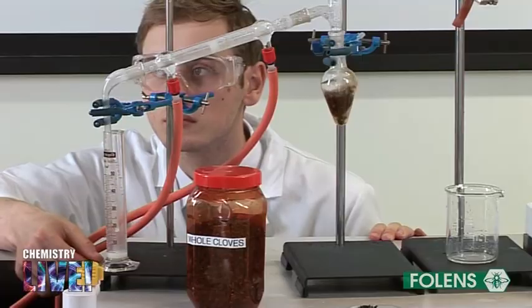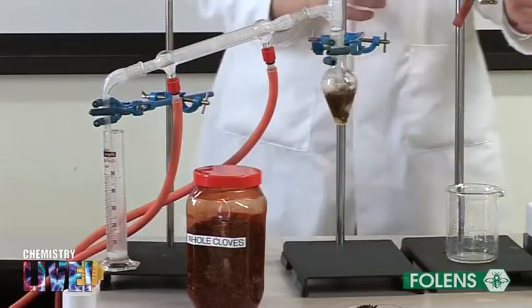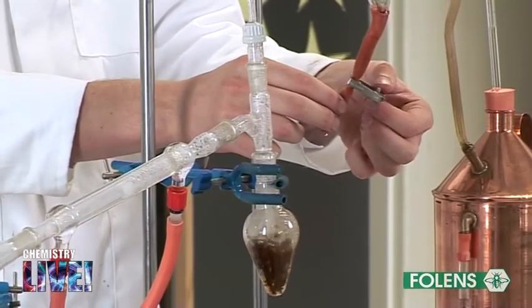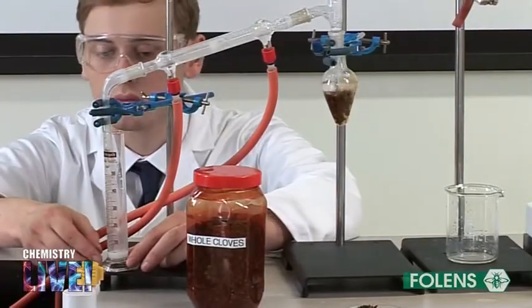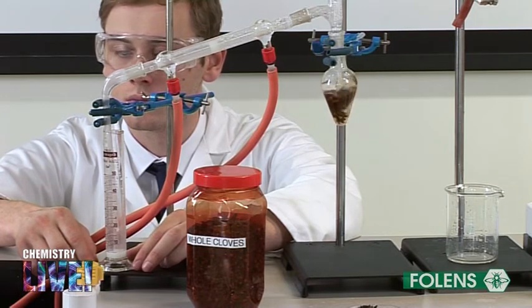Note that the emulsion has a milky colour. From time to time we may also have to empty the steam trap of water. We notice that the white milky coloured liquid is being extracted from the cloves.